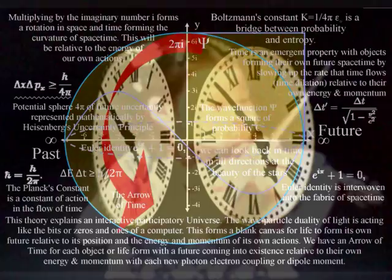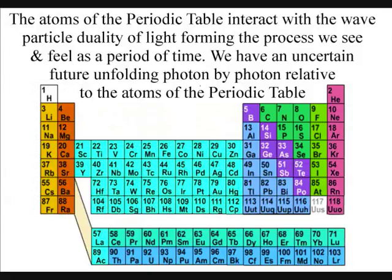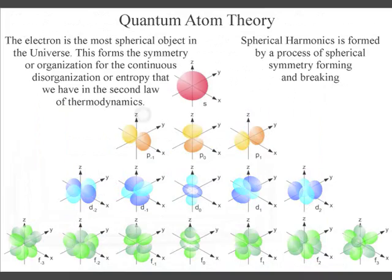In such a theory the future is unfolding relative to the atoms of the periodic table with the wave-particle duality of light and matter in the form of electrons forming a blank canvas that we can interact with, forming the possible into the actual.